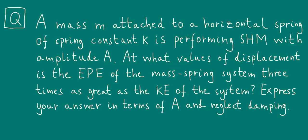Let's take a look at the question. A mass M attached to a horizontal spring of spring constant K is performing SHM with amplitude A. At what values of displacement is the EPE of the mass spring system three times as great as the KE of the system? Express your answer in terms of A and neglect damping.